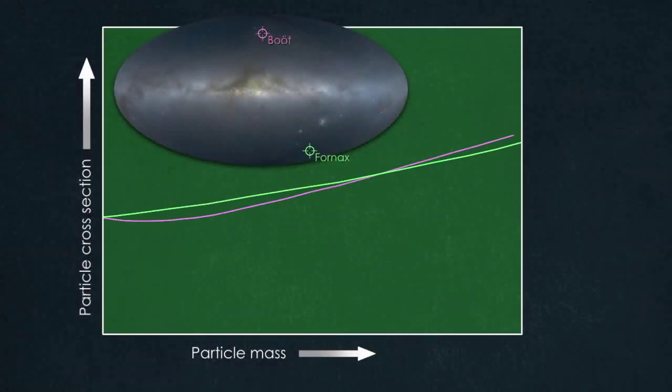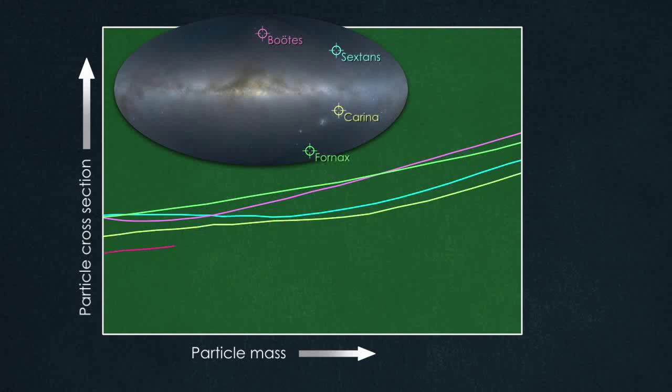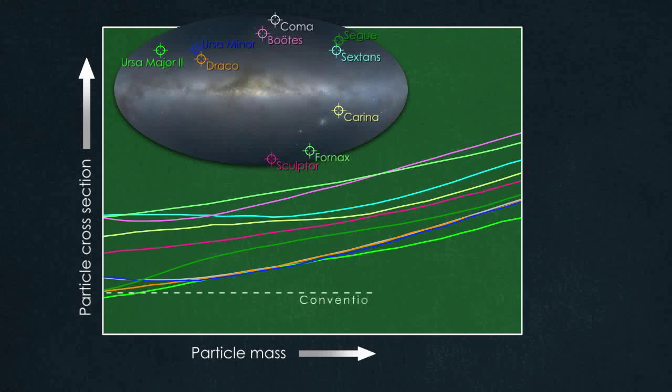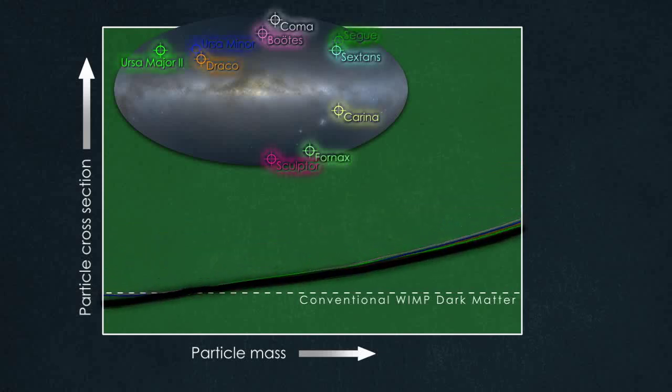Using two years of data, Fermi scientists explored ten dwarf galaxies for any sign of gamma rays from WIMP annihilation. In this graph, the dashed line marks the sweet spot where conventional expectations for WIMP dark matter align with what we know about our universe. Even when scientists combine all of the Fermi data from all ten of the dwarfs, they see no sign of gamma rays.